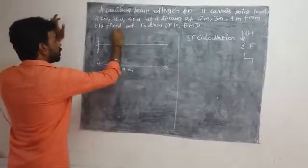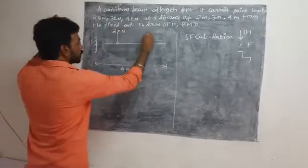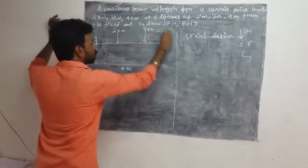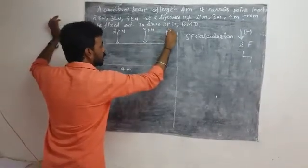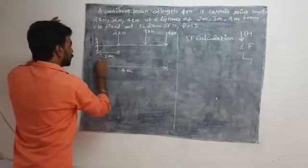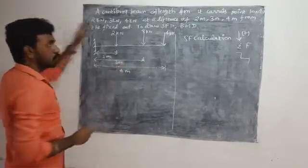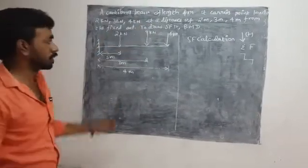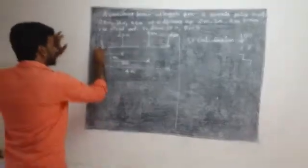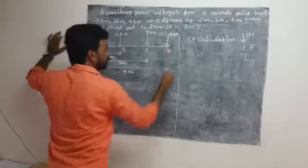The loads are: at 2m distance — 2 kg; at 3m — 3 kg; at 4m — 4 kg. We label the distances and call the points A, B, C, D. The first point is A, then B, then C, then D.